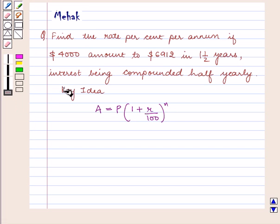With this key idea we shall proceed with the solution. According to the question we have to find the rate percent if $4,000 amount to $6,912 in one and a half years.